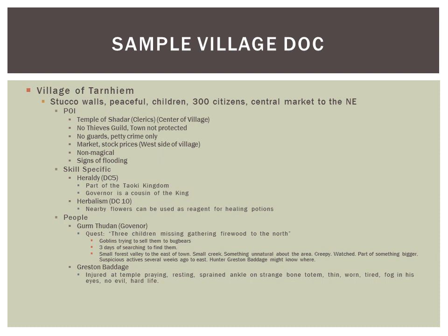Here's a sample simple village I would use — the village of Taim: stucco walls, peaceful children, 300 citizens, central market to the northeast. That's it. I don't need to describe much else. There are specific points of interest depending on who's in the party. I write the adventure and campaign to the characters, so if someone's playing a cleric I might add a temple, and if someone's playing a thief I'd note there's no thieves' guild. Some signs of flooding give them a sense of the weather that may factor into the story.